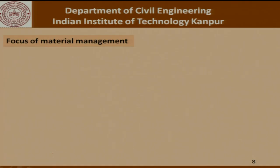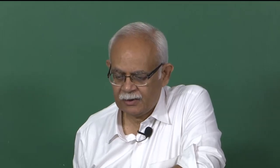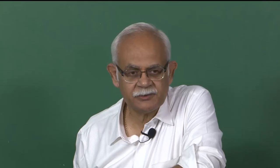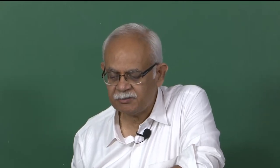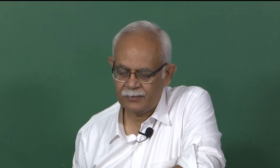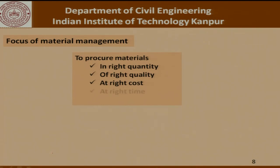The focus of material management lies in procurement of materials in the right quantity. We obviously need a very clear understanding of how much of what material is required. Of the right quality — there have to be specifications which tell us, for example, that we want an RC pipe of a certain diameter, certain length, and these numbers conforming to a given standard. At the right cost and at the right time — it makes no sense to buy all the material required in a project upfront when that material is going to be used at a later point in time.